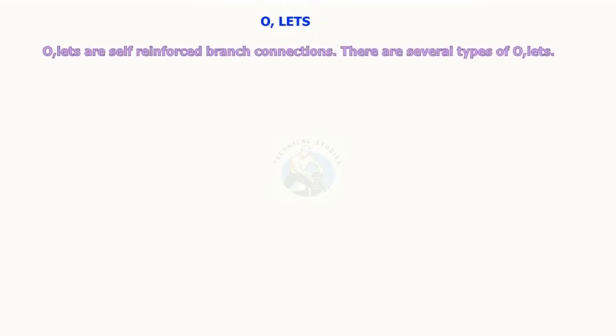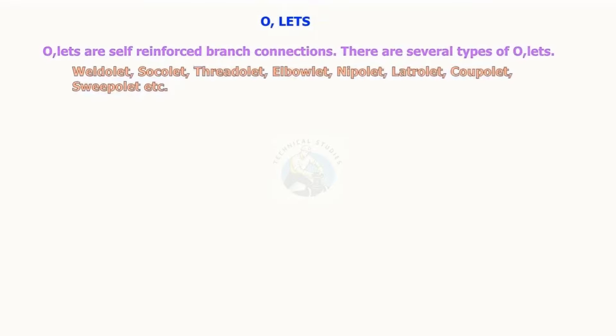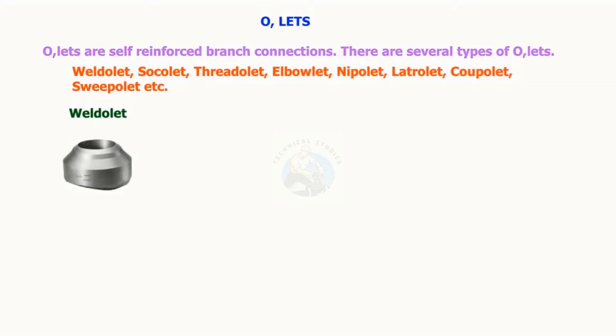Olets are self-reinforced branch connections. There are several types of olets: weld olet, socket olet, thread olet, elbow olet, knee olet, lateral olet, and coupolet, sweep olet, etc.